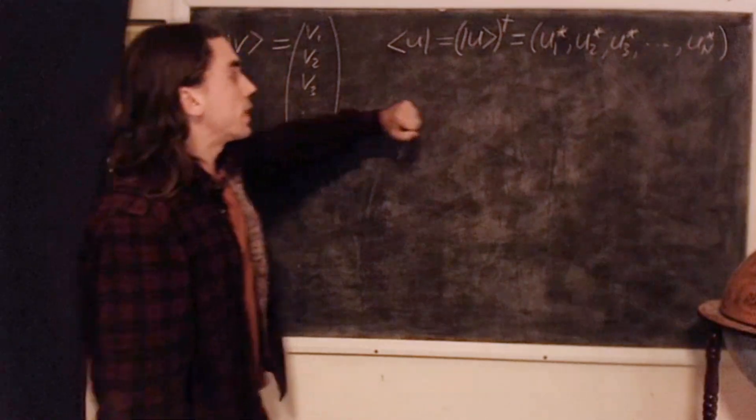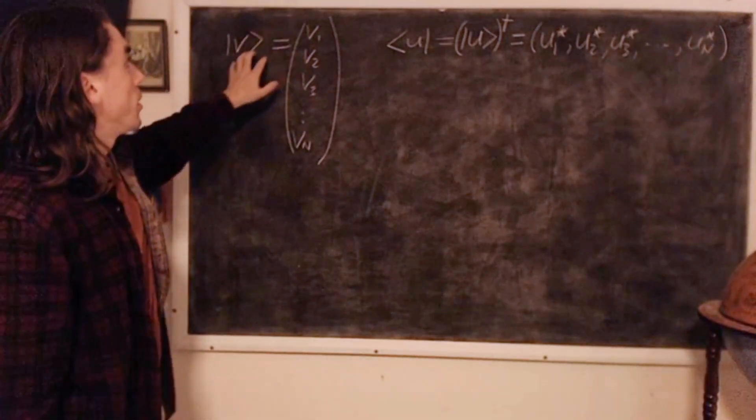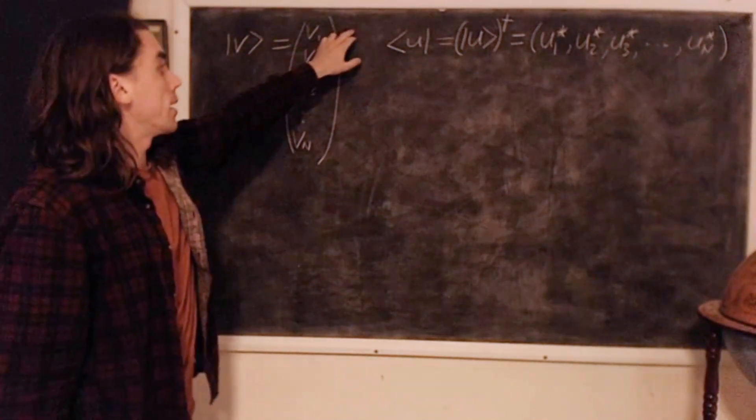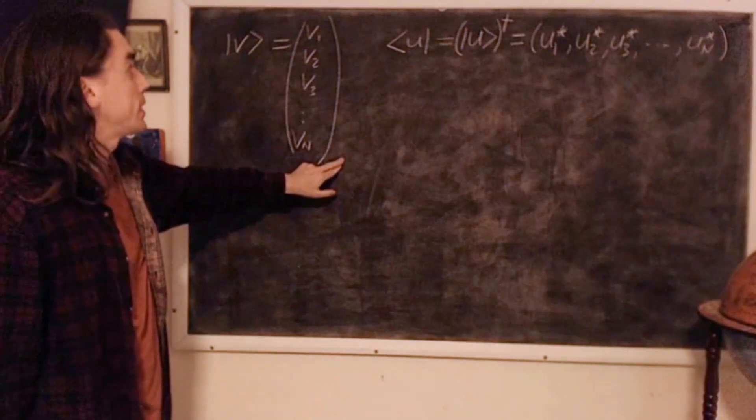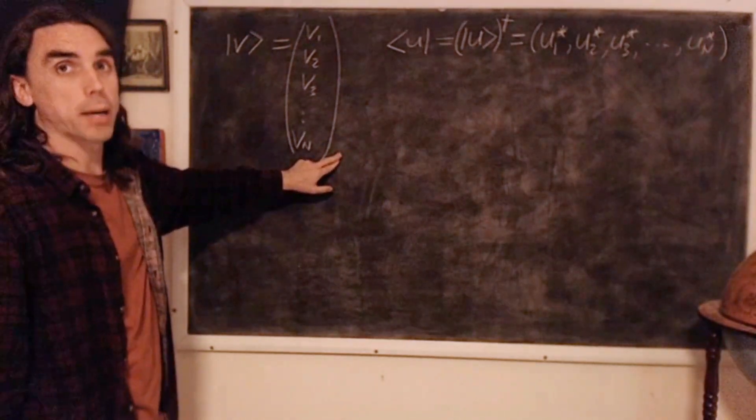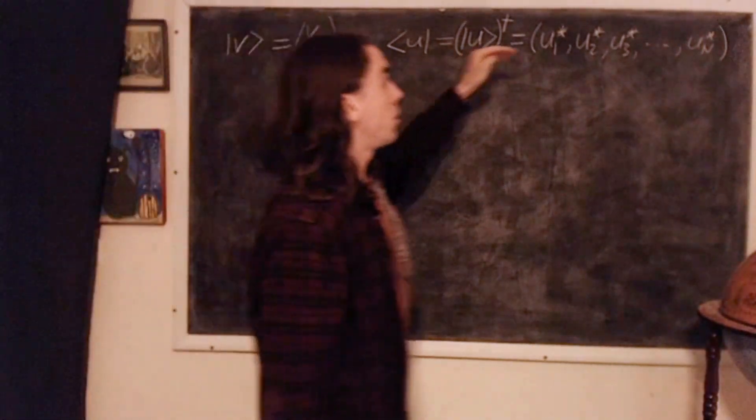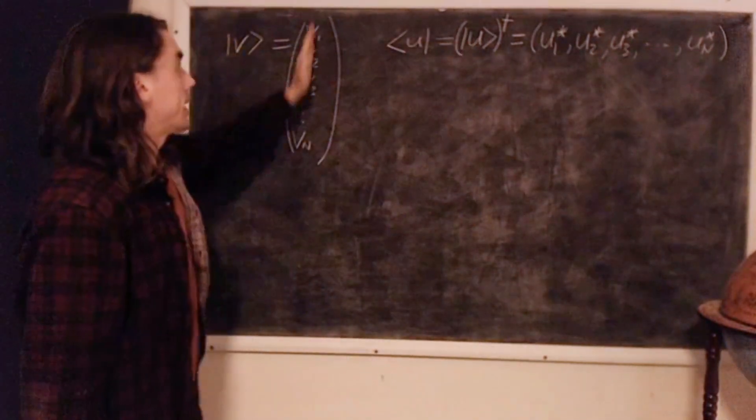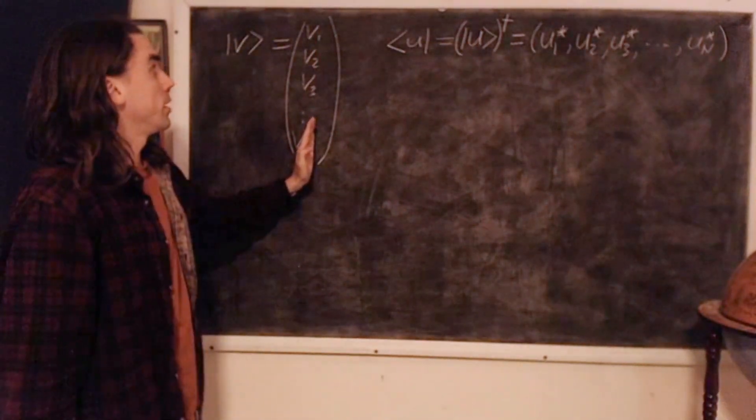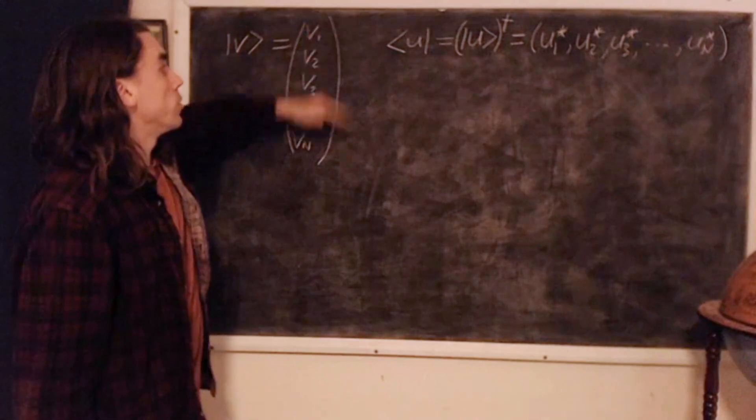That is, we've taken the transpose. So a vector is an n by 1 matrix, like this. So its transpose must be a 1 by n matrix, so it has 1 row and n entries, whereas this has n entries, sorry, n rows and 1 column.